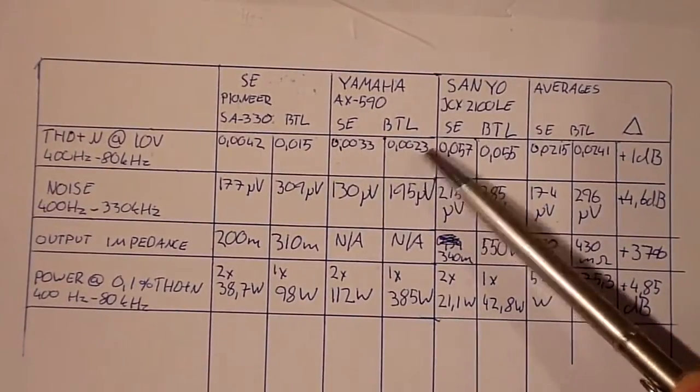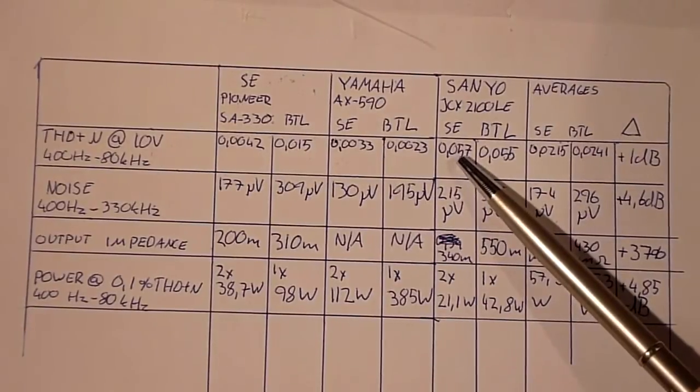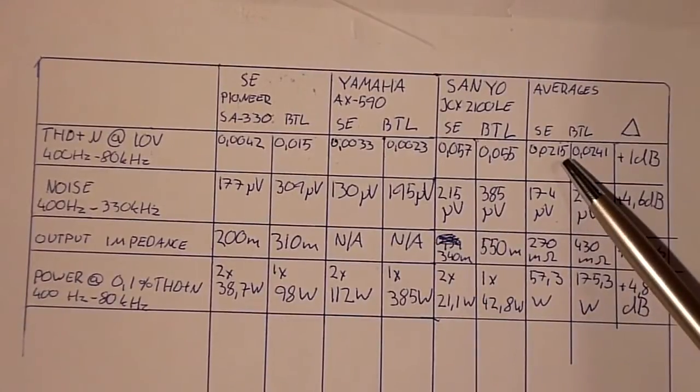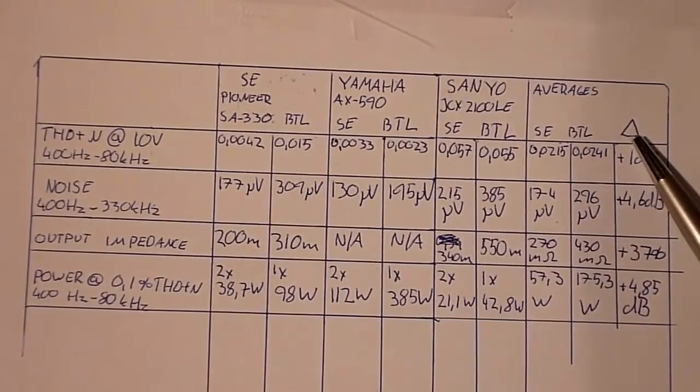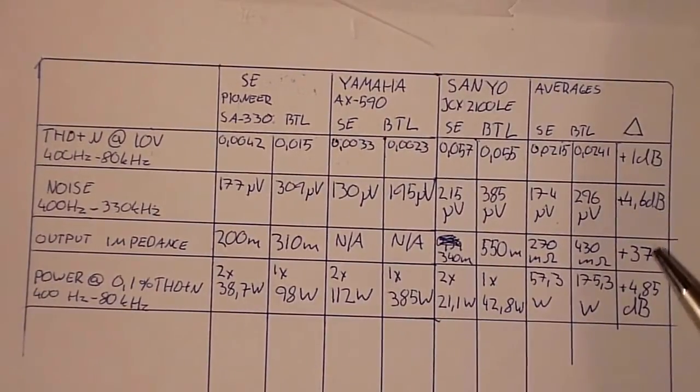the Yamaha AX590 single-ended and bridged, and the Sanyo JCX2100 LE single-ended and bridged. And over here we've got the averages for all three units and the differences between single-ended and bridge tied operation.